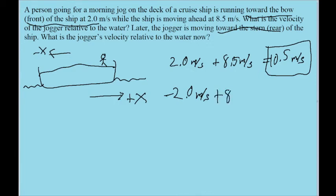Plus a positive 8.5 meters per second, since that's the direction that the boat's moving in the positive axis, in the positive direction of the axis. So we add these together, and we get 6.5 meters per second in the direction that the boat is moving.